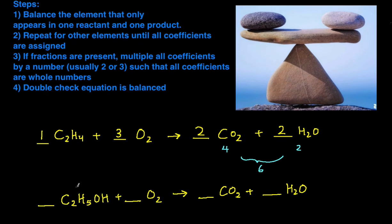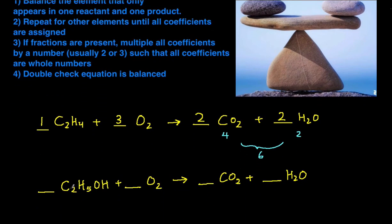Moving on to a slightly more difficult example. Again, the first step is to find the element that's only in one reactant and one product. We could do carbon or hydrogen — let's do hydrogen this time. I have five hydrogens here plus one here, so in total six hydrogens on the left hand side and two on the right hand side. So I'm going to put a coefficient of three here, because three times two is six, and a coefficient of one on the reactant. Now I have six hydrogens on both sides.